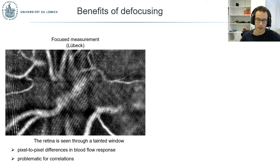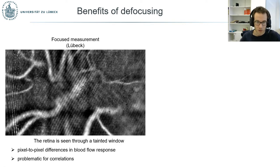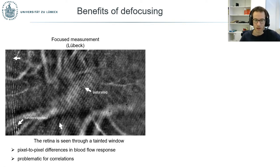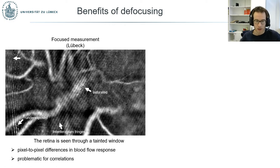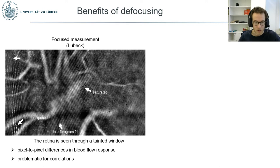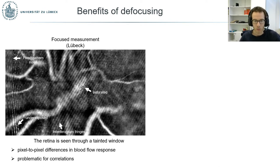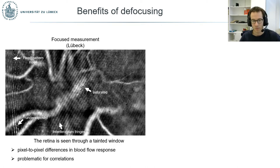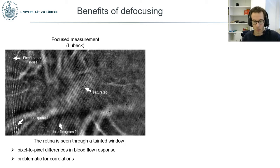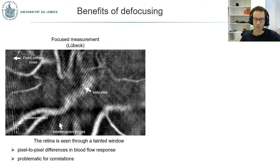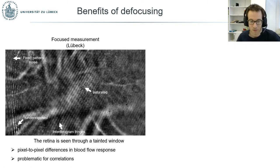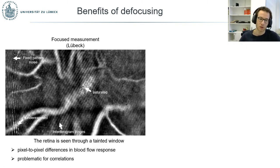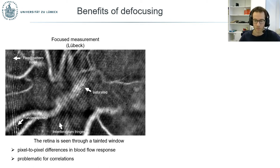These artifacts are particularly visible when the eye is moving. There are dead pixels — either white or black — because original pixels were underexposed or saturated, residual influence from the interferogram illumination, and noise with a specific pattern corresponding to sensor defects. It feels like the retina is seen through a tinted window, with residual pixel-to-pixel differences in blood flow response that are visually unpleasant and problematic for sophisticated processing such as spatiotemporal correlation analysis.